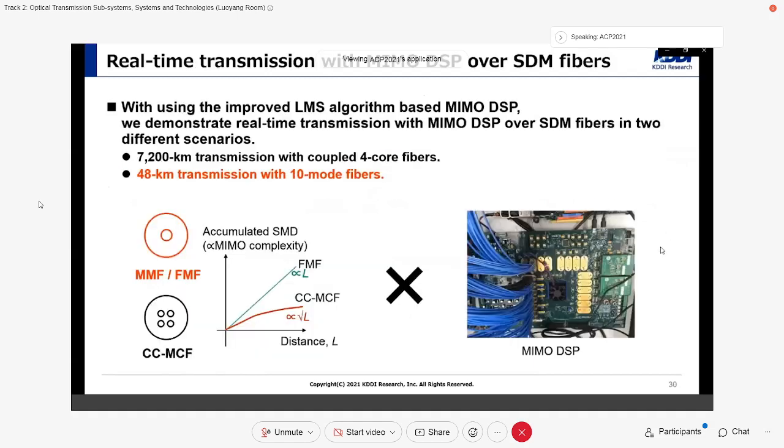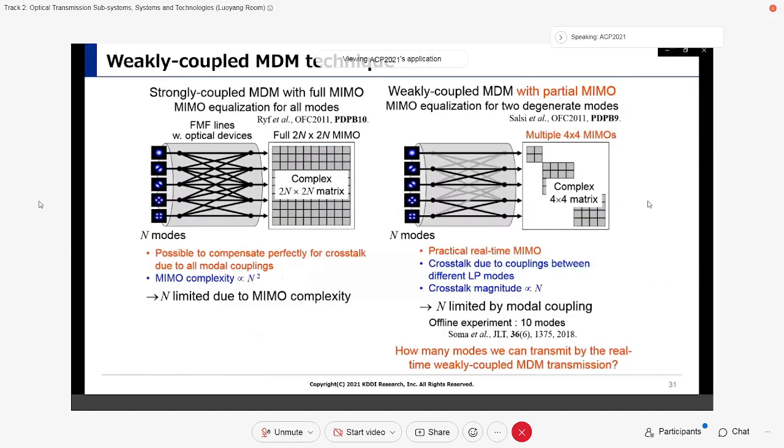Next, we show 48 km transmission with 10-mode few-mode fibers. As you have seen, we implemented real-time MIMO DSP for four modes. Therefore, the maximum number of modes N is limited to four. However, by using weakly coupled MDM technique, we can transmit more than four modes.